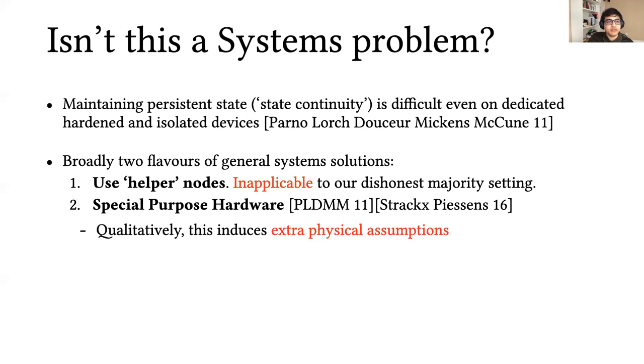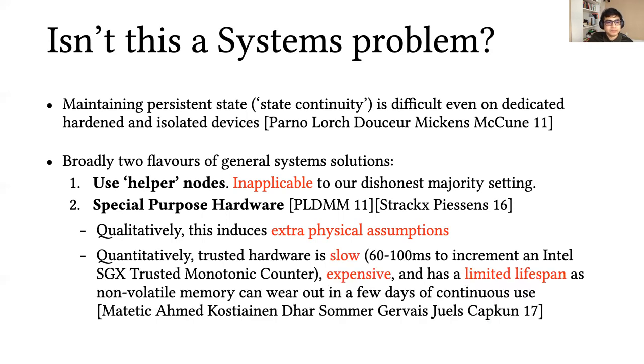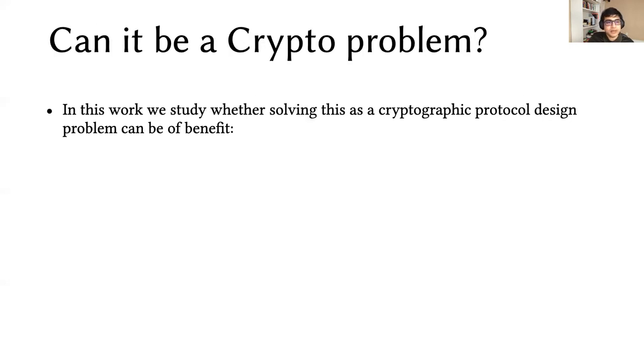This is unsatisfying for a couple of reasons. Qualitatively, this introduces extra physical assumptions. We have to trust hardware. And quantitatively, it turns out that this is still quite slow. Matetic et al. found a latency of about 60 to 100 milliseconds in implementing an SGX monotonic counter. Others found even larger latencies. Of course, it's also expensive to purchase new hardware for each new deployment. And additionally, this also has a limited lifespan. In their work, they also found that non-volatile memory can wear out in just a few days of continuous use.